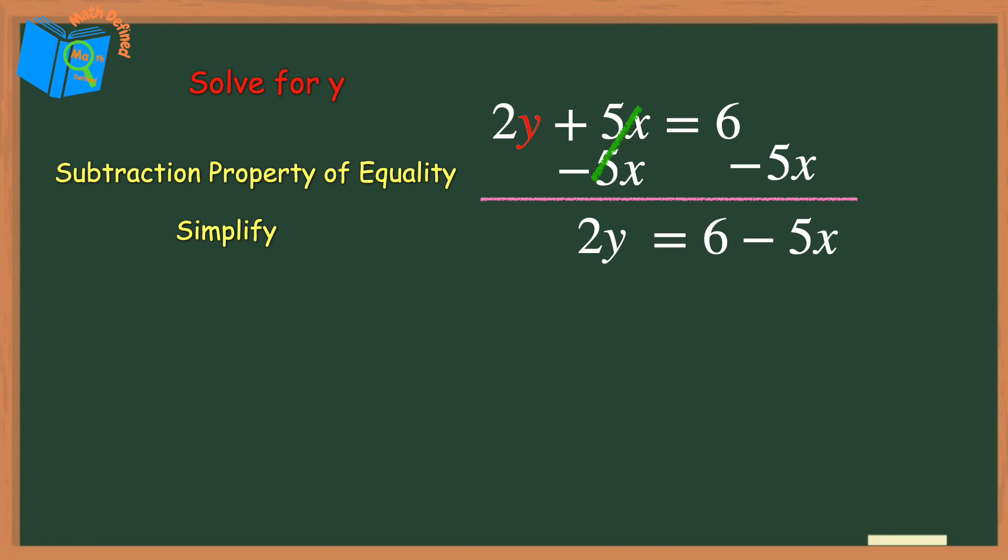The next step is to use the division property of equality to isolate just the y. So we will divide each side of the equation by 2. We can simplify again. Starting on the left, the 2s will cancel each other out, leaving just the y.